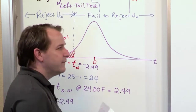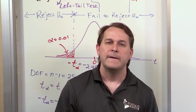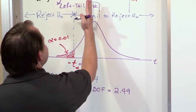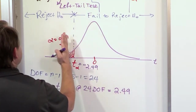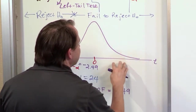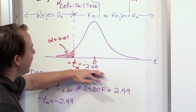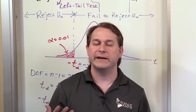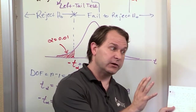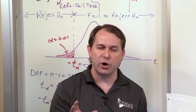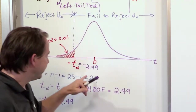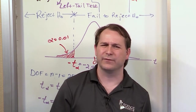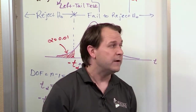To double-check you've done everything right, look back at your picture: the center is 0, all values of T should be negative on the left side and positive on the right. So you expect a negative critical value. Drawing a picture is crucial — without it, you can easily use the positive value by accident and get confused.